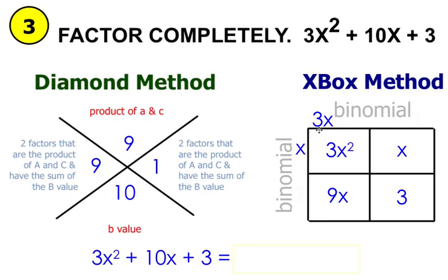Ask yourself, 3x times what will give me 9x? That would be 3. Then you can ask yourself, 3 times what will give you 3? That would give you 1. And then finally, 1 times x gives you x.